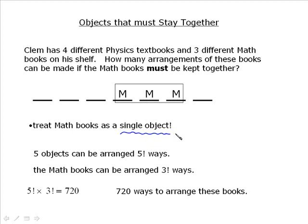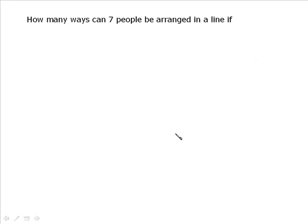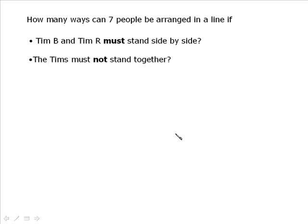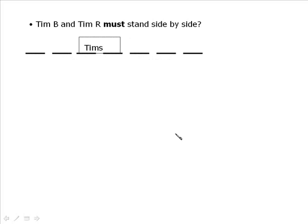Let's try another one. How many ways can seven people be arranged in a line if Tim B and Tim R must stand side by side? That's question number one. Question number two is the Tims must not stand together. So for the first one where Tim B and Tim R must stand together, I've got the diagram up already. The Tims are going to be together. And as before they can be anywhere, to the, you know, slide them all over. But they have to stay together.